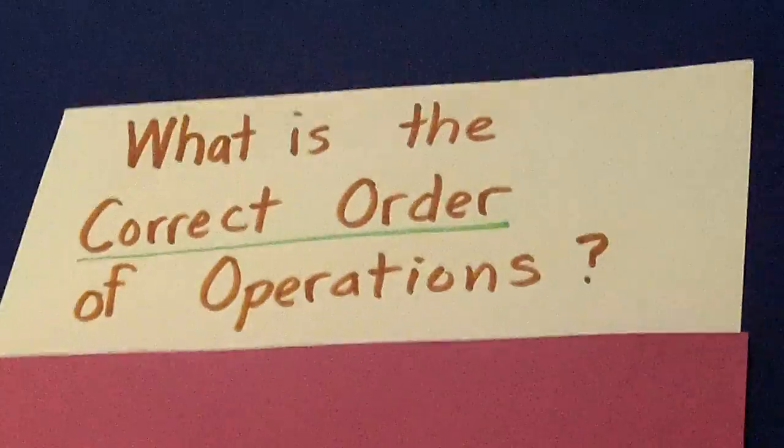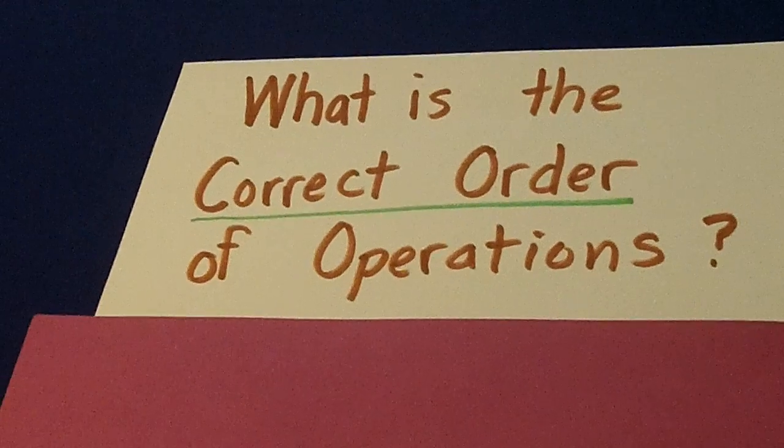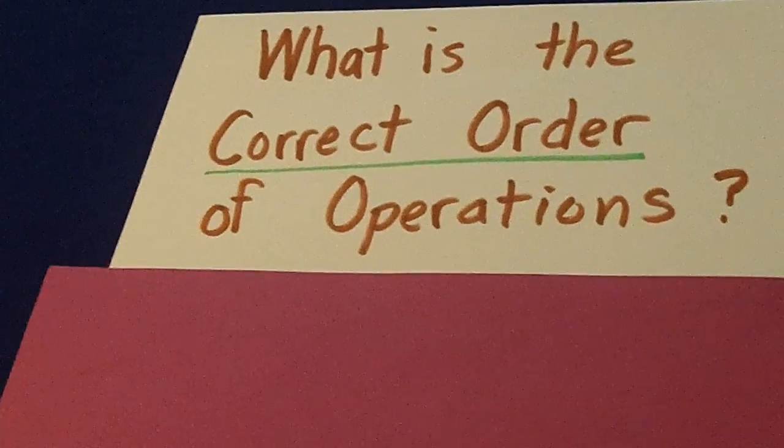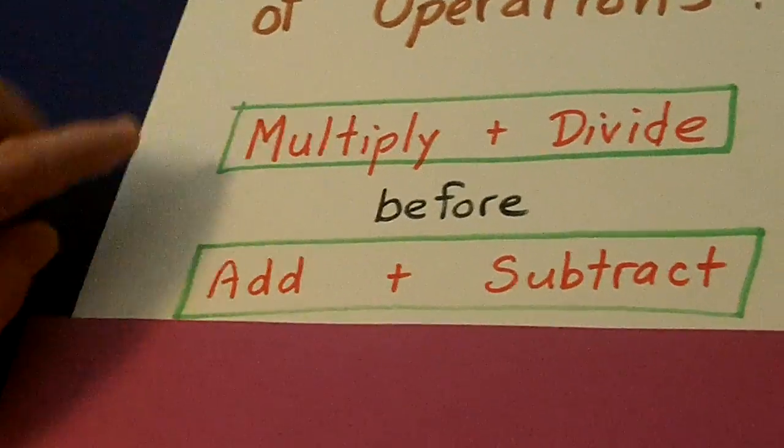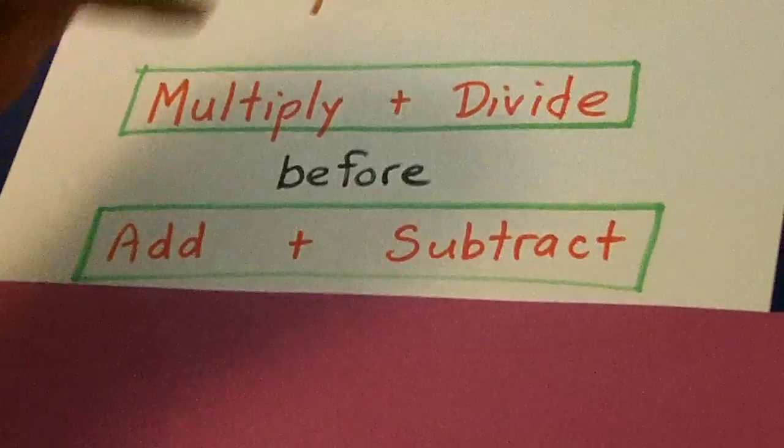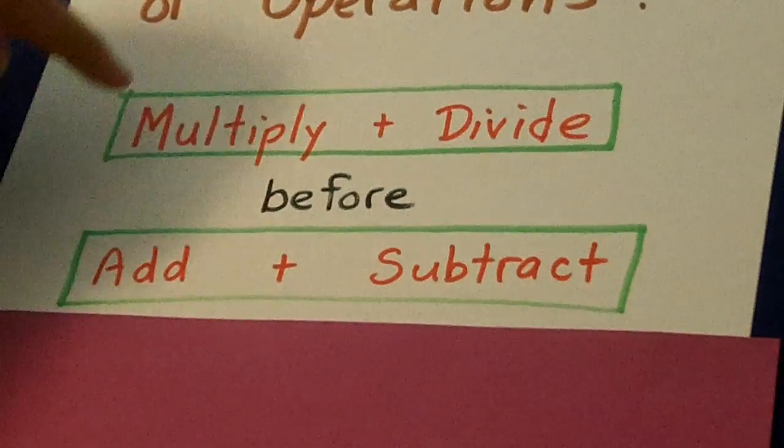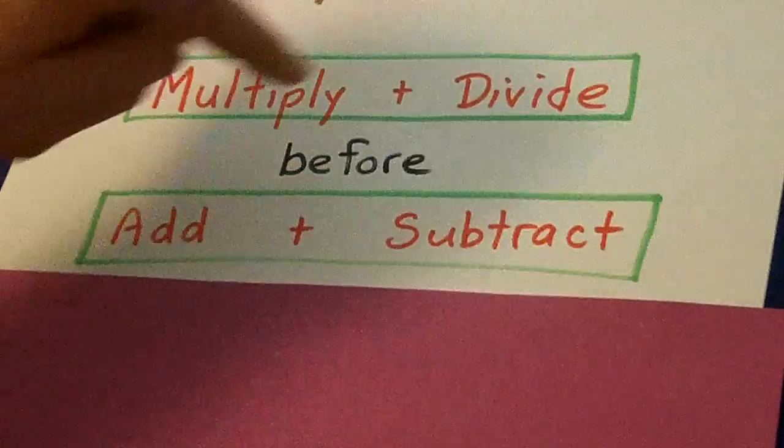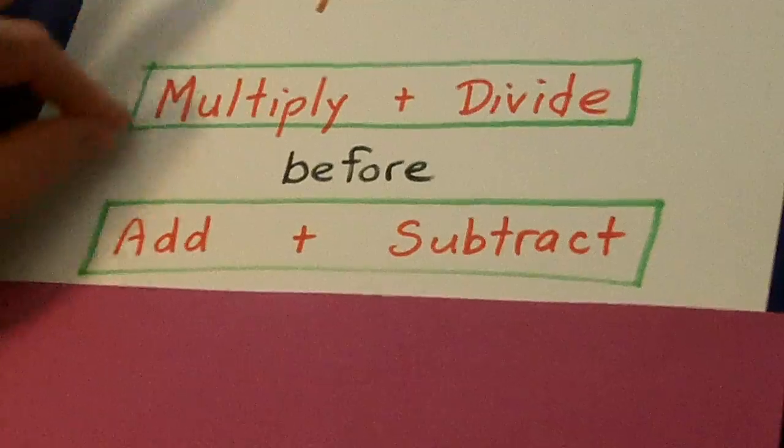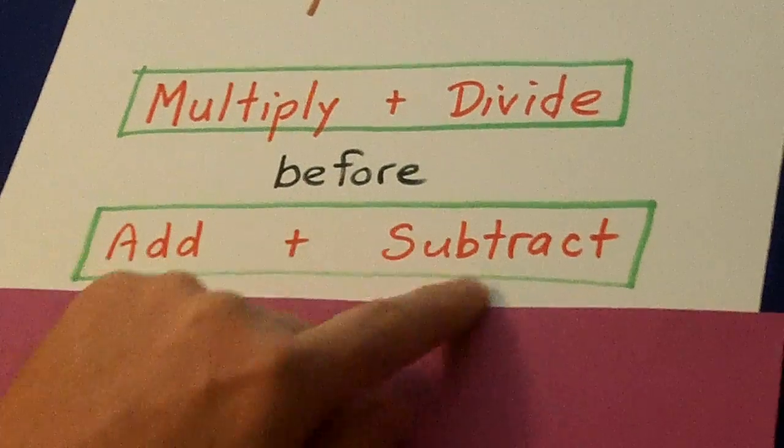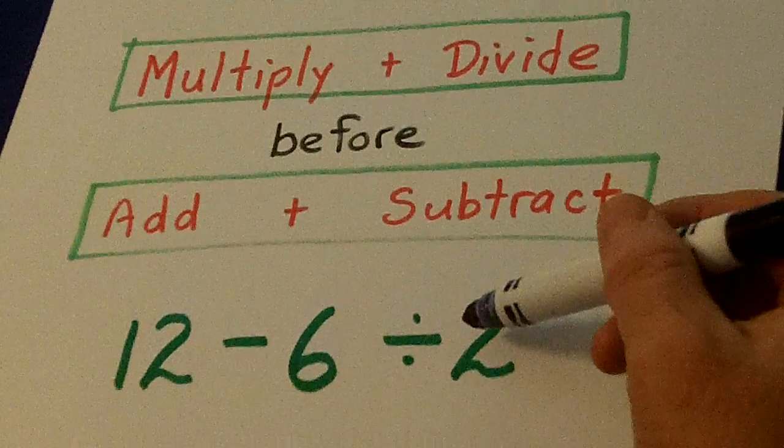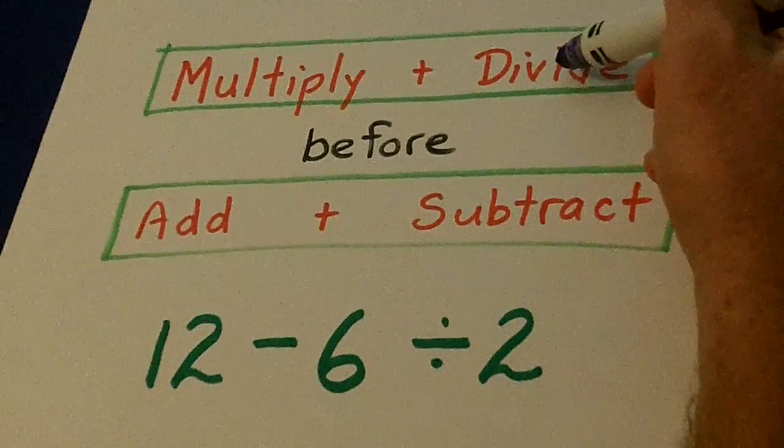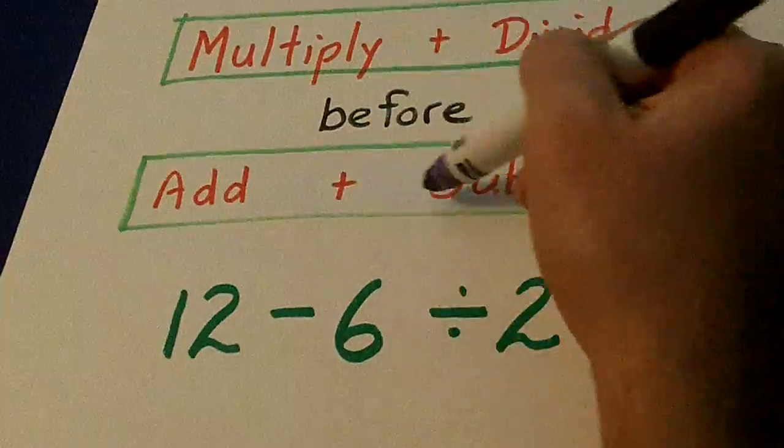What is the correct order of operations? Most of the time, when we have equations, we're going to deal with multiplying, dividing, adding, and subtracting. And multiply and divide, we're supposed to do those two things before we add and subtract. Let's look here. Which comes first? Well, we're going to divide before we subtract.